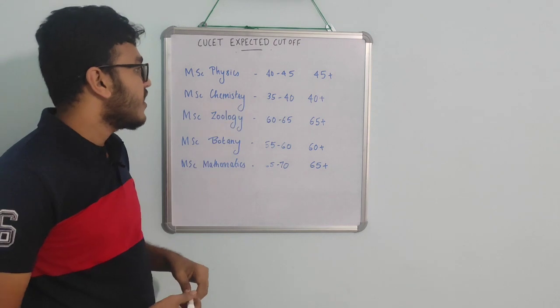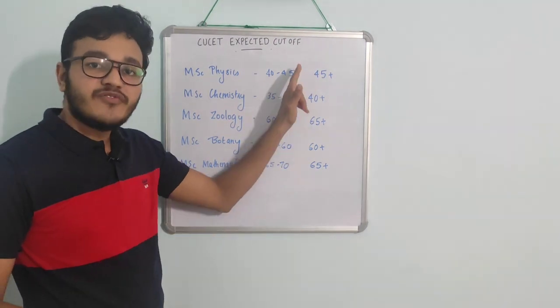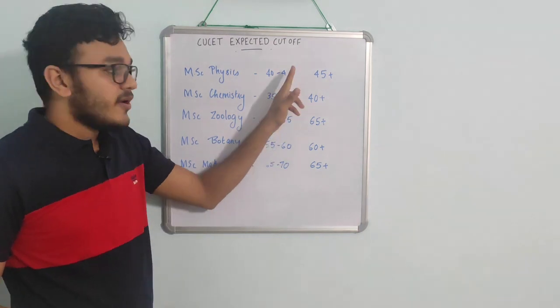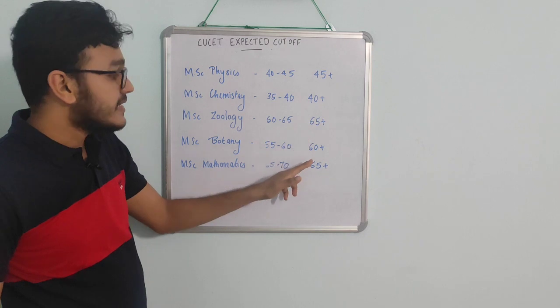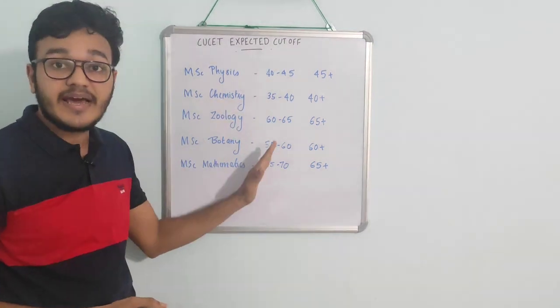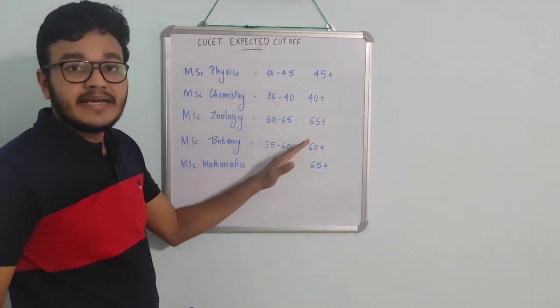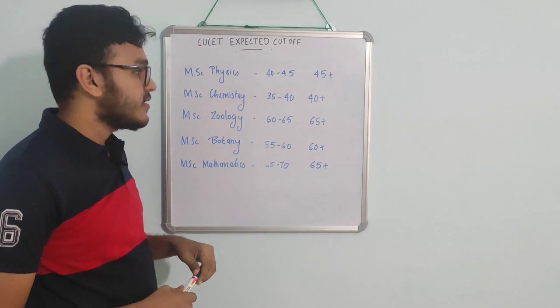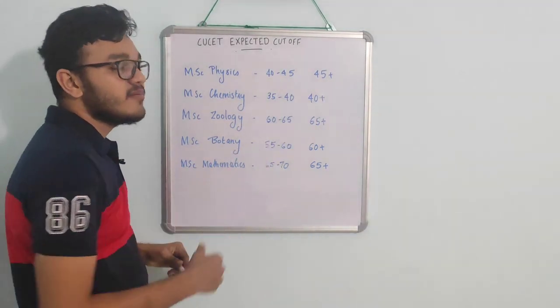This is the expected cutoff. If you mark the expected cutoff, the first cutoff is in the safe zone. Then it is 45 plus, 40 plus, 65 plus, 60 plus, 65 plus. This is a subject, the safe zone. You may be sure to go on. Then you will see the results of this. If you mark the model in this cutoff, you will see the documents.